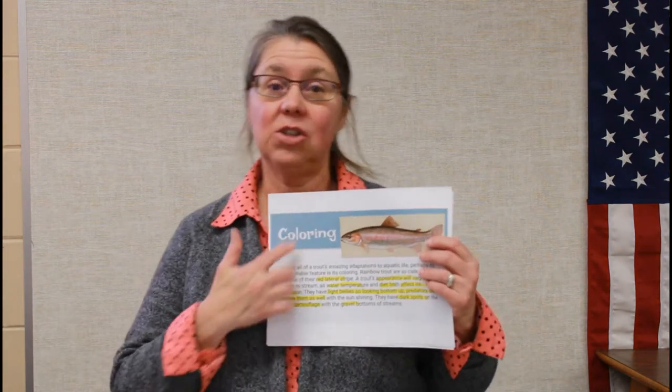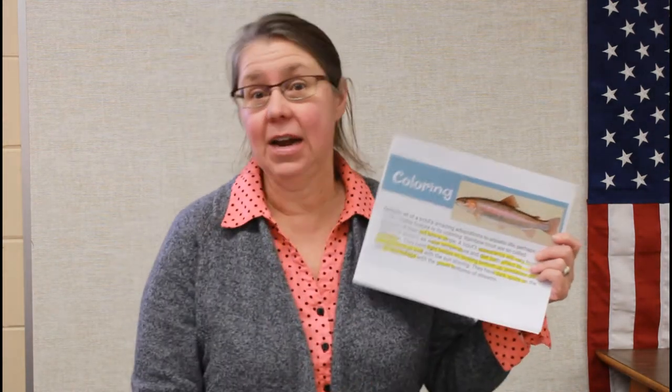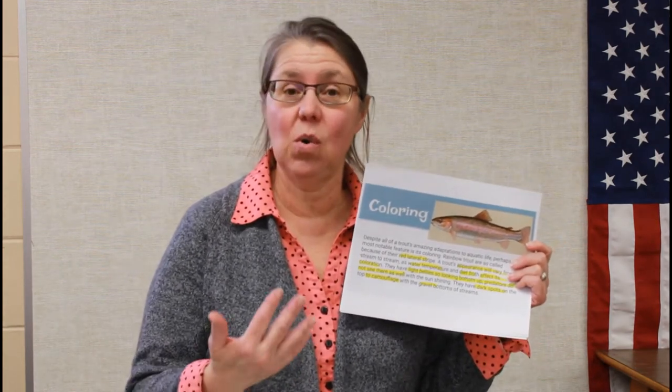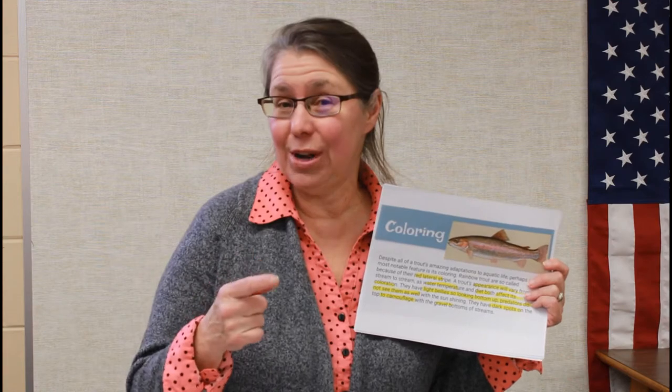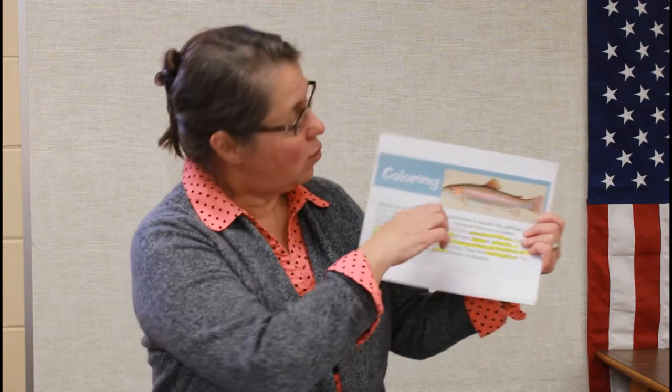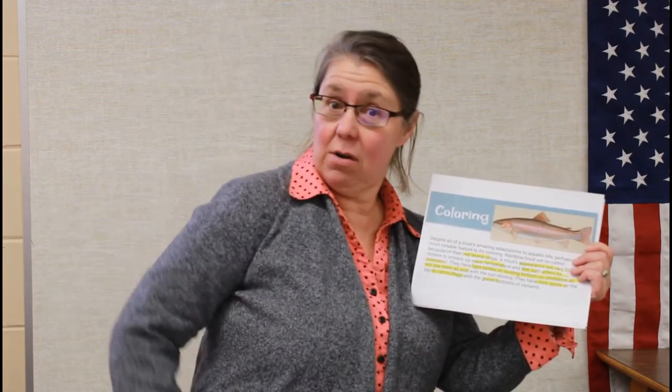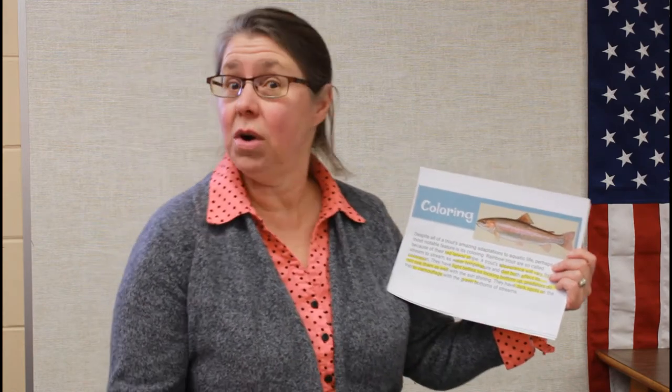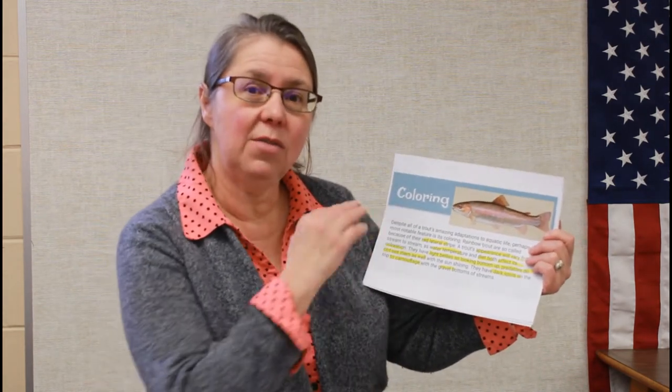One thing you're gonna notice right away is the color. Now our trout are actually rainbow trout, so that word gives you a clue — ours have a lot of color. It starts with a red lateral stripe right down the side of the trout, then we might see a little green, a little brown, a little orange. What temperature the water is and what the fish eat can affect the coloring. Even here, our little trout, we're noticing a little bit of color variation within the tank.